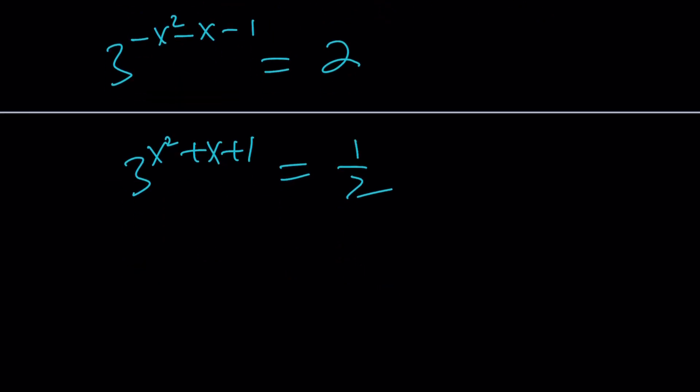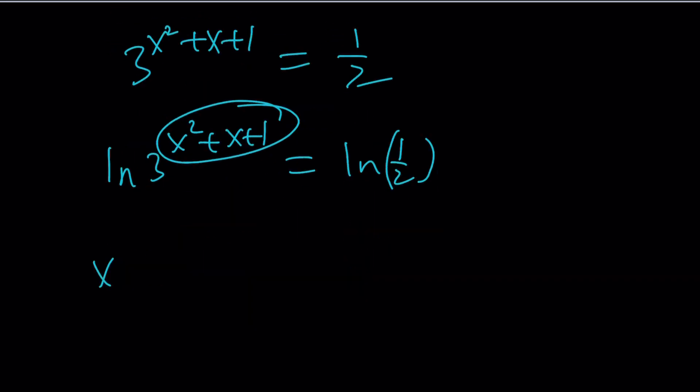And now how do you solve this problem? Just ln both sides, easy, right? ln 3 to the power x squared plus x plus 1 equals ln 1 half. And then this you can bring to the front. And then by division you're going to get the following. That's it.